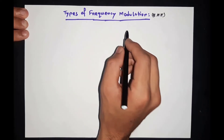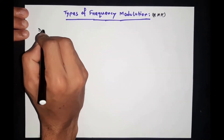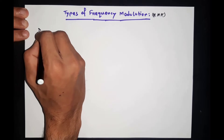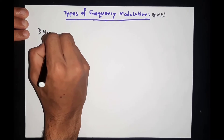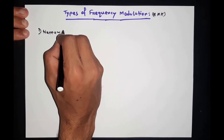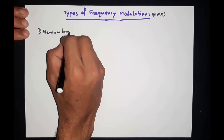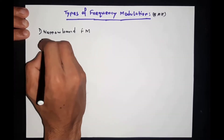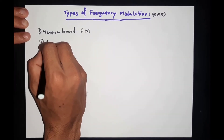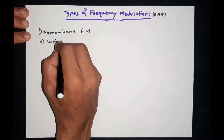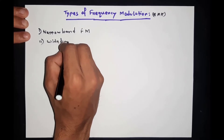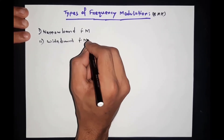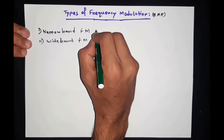Frequency modulation is of two types. One is narrow band frequency modulation, and the other is wide band frequency modulation.